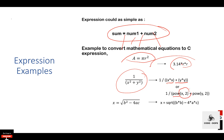We can also use the power function: 1 / pow(x, 2) + pow(y, 2). The pow function takes two arguments — the first argument is the base and the second argument is the exponent. Another equation: x = √(b² - 4ac) can be written in C as x = sqrt(b * b - 4 * a * c), using the sqrt function to compute the square root.